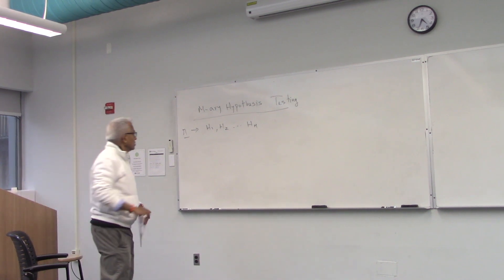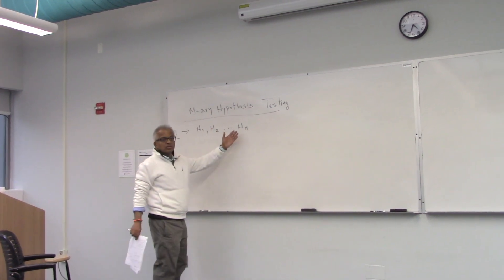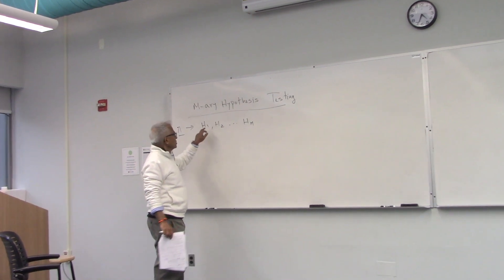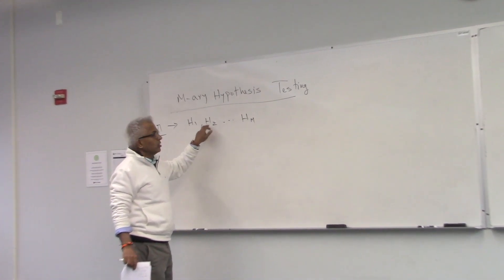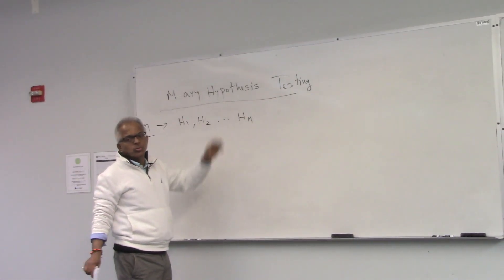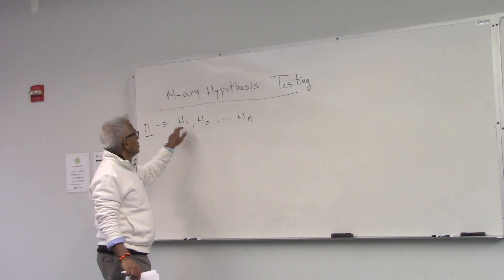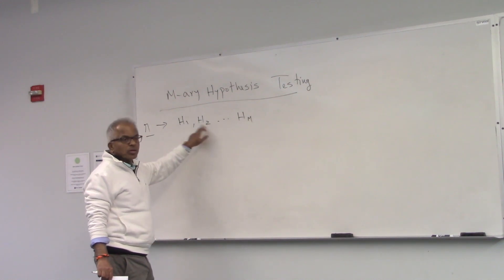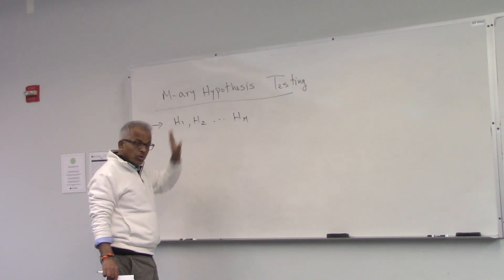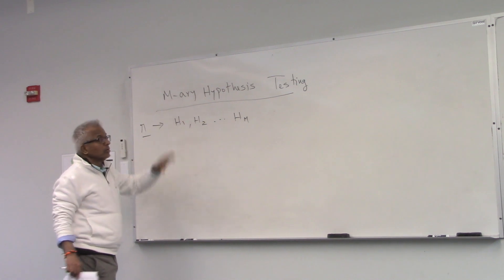Binary hypothesis testing. We have M options, written as H0, H1 through Hm-1, or H1 through Hm. Binary would be H1 and H2, or H0 and H1, which we already covered. So data comes in.